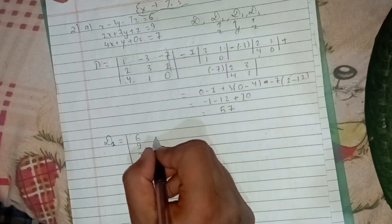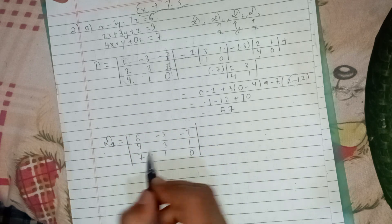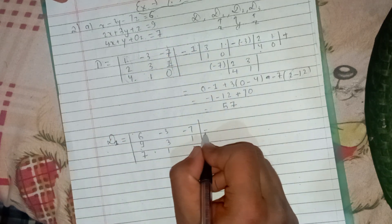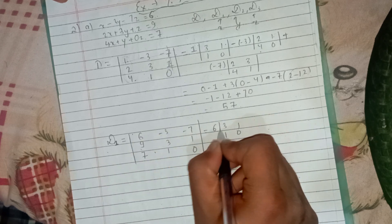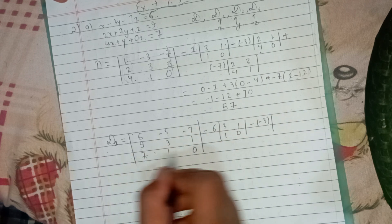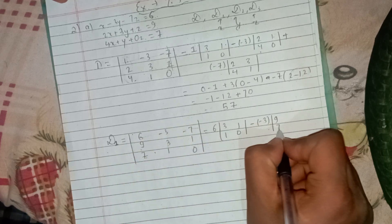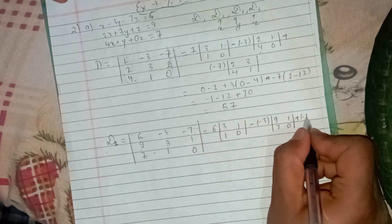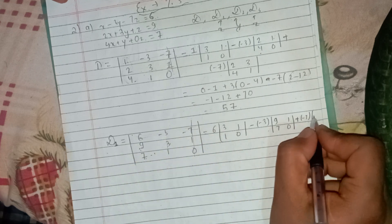For D1: 2 will be 1, 2 will be 3 plus 1, 3 will be 3 times 3, 1, 1, 0 and minus 3 times. 9, 1, 7, 0. 9, 7, 1, 0. Plus and minus and plus. Minus 7 times. 9, 3, 7, 1.